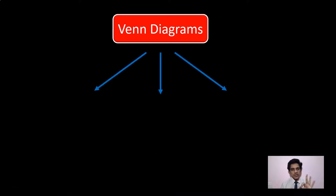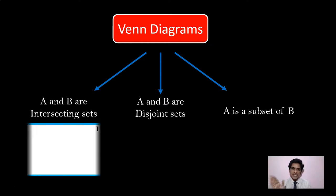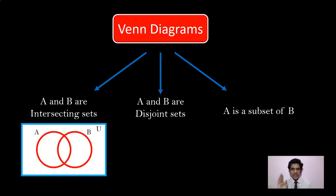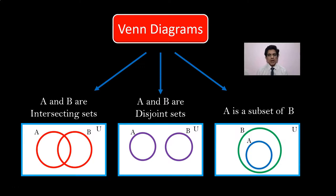So when you have two sets in a Venn Diagram, there are three different cases. One: A and B are intersecting sets. Two: A and B are disjoint sets. Three: A is a subset of B. Each case has a different way of drawing the Venn Diagram.